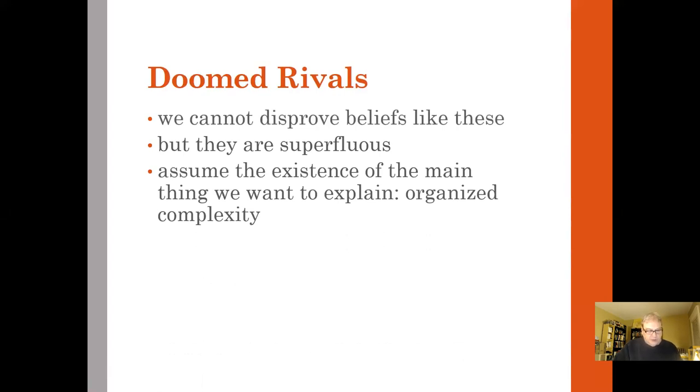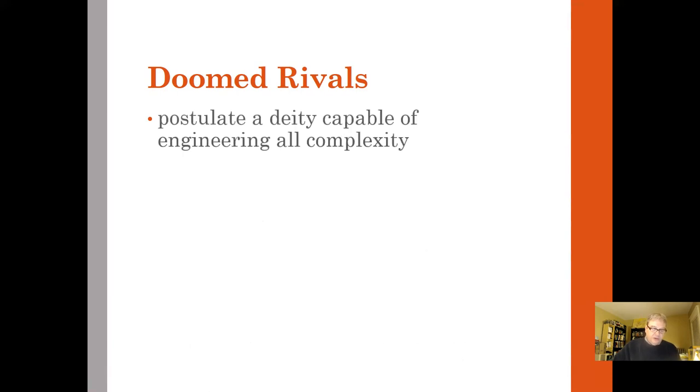In addition, it assumes the existence of the main thing we want to explain. Now if God is lying behind this and was at the beginning of this whole process, well this is a complex organism indeed. We're trying to explain complexity, but a deity is certainly a complex organism if anything is. So it's already assuming complexity when that's the thing that we are trying to explain through natural selection or through the religious examples. So if we want to postulate a deity capable of engineering all the organized complexity in the world, that deity must already have been vastly complex in the first place.